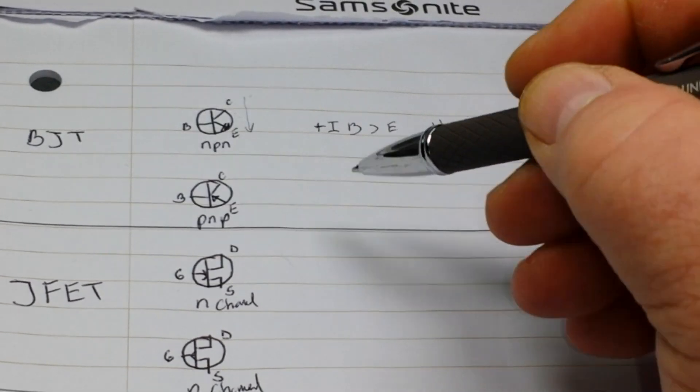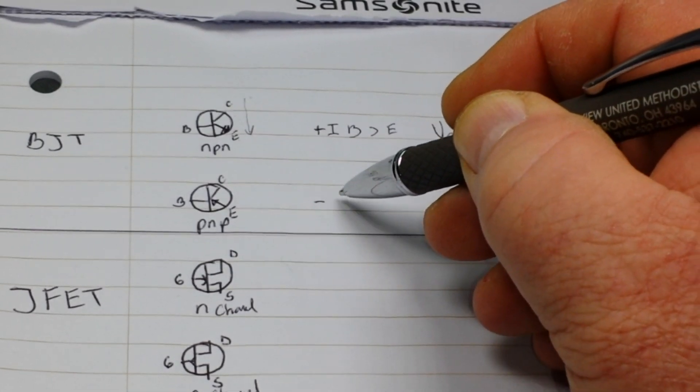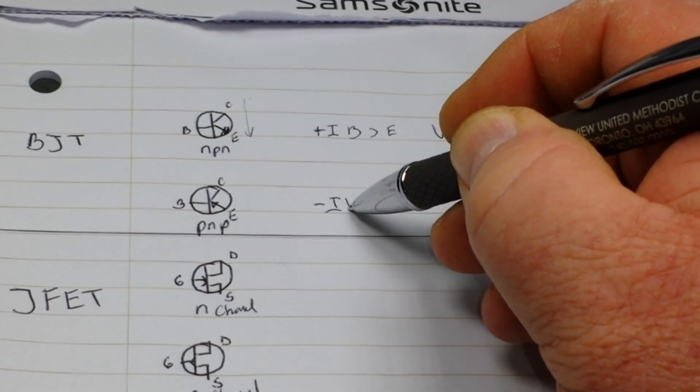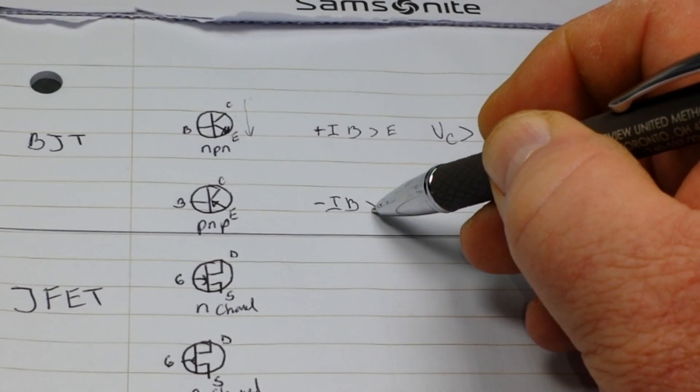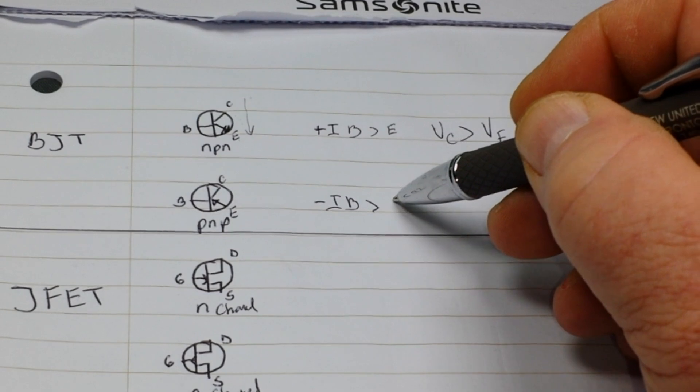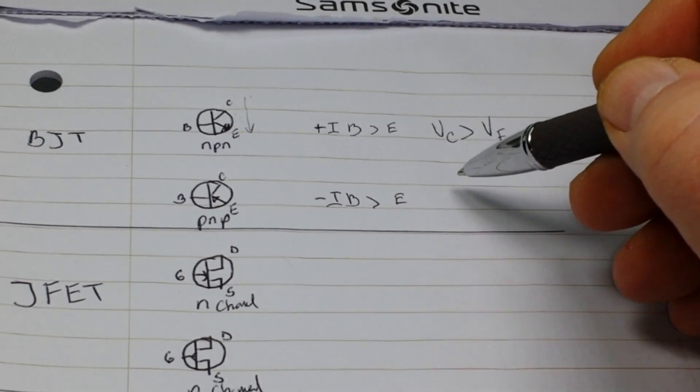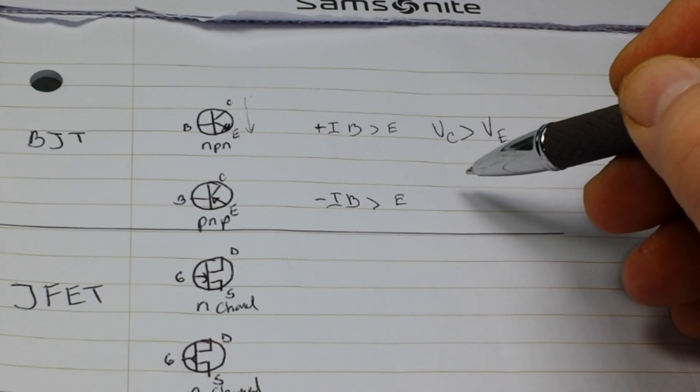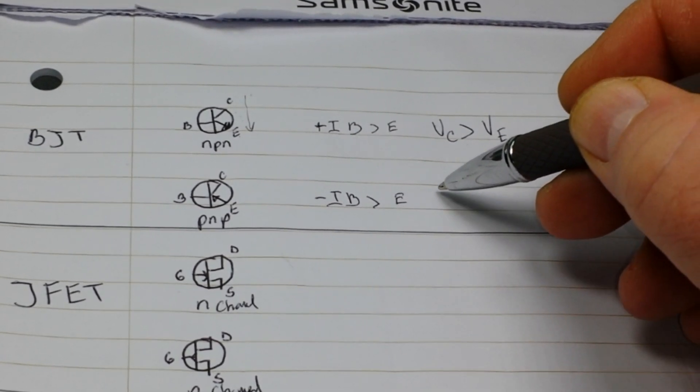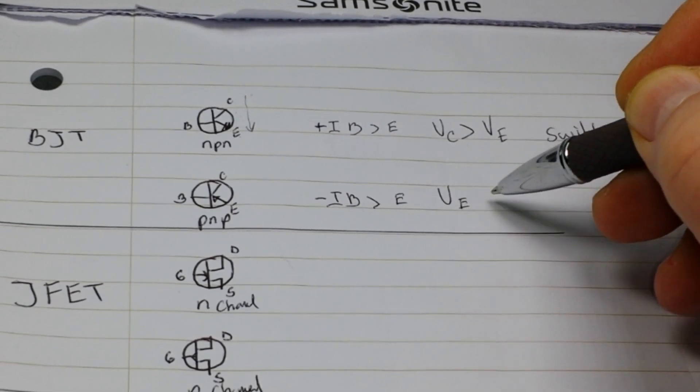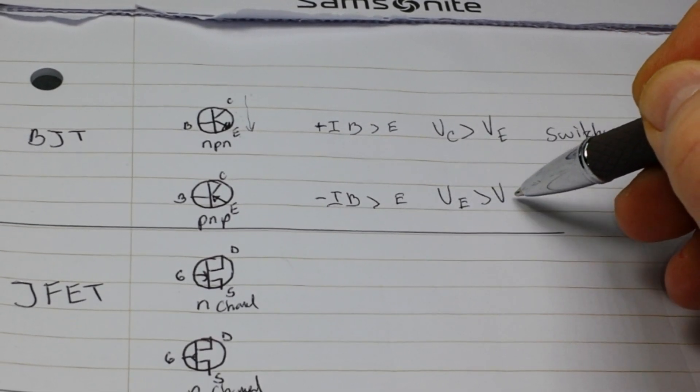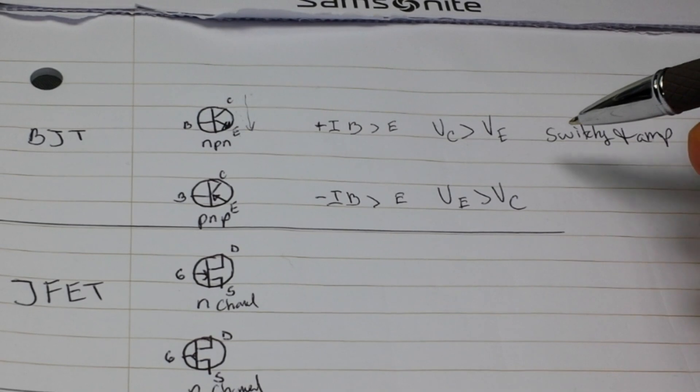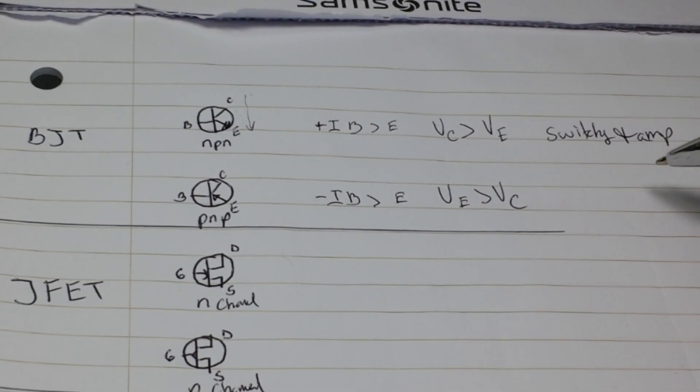Alright, PNP channel, simply the opposite. A negative current at the base, in regards to the emitter, lets the current flow in the opposite way. And it operates VE is greater than VC. And it's also used in switching and amplifying applications.